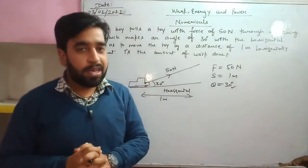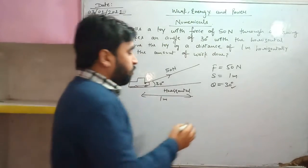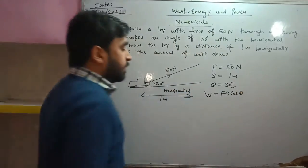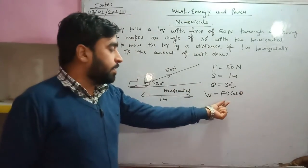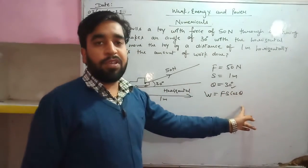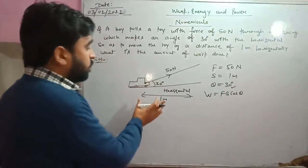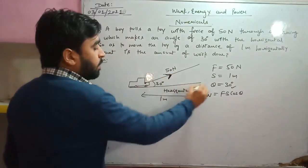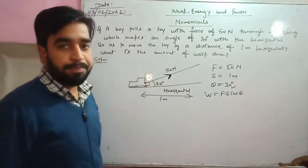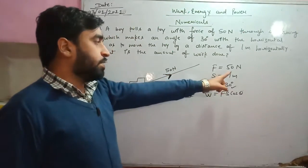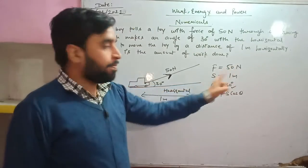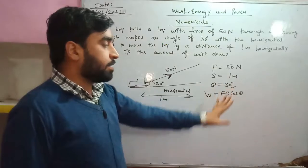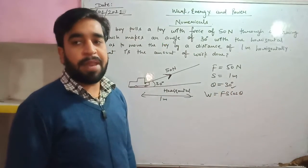As we have studied in our classes, the work done formula is W = F·s·cosθ, where F is the force, s is the displacement, and θ is the angle between the force and the horizontal. Before applying the formula, you must check that the parameters are in the correct SI units.